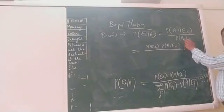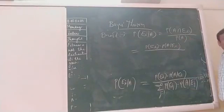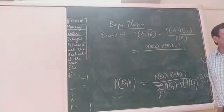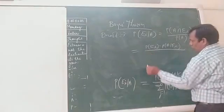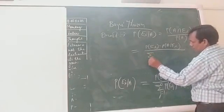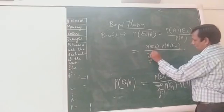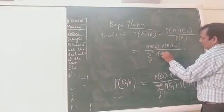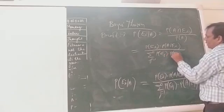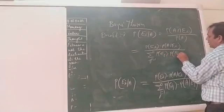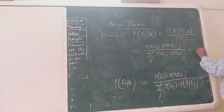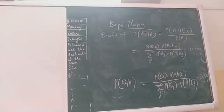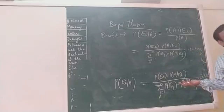Now what we can write this? We can write this like P(Ei) into P(A|Ei). And what this will be written? This will be written as I have already told in the theorem of total probabilities, that P(A) is nothing but this. So you have to write, J equal to 1 to N, P(Ej) into P(A|Ej). Here I equal to 1, 2, 3, up to N. So only two lines you have seen, this is the proof.